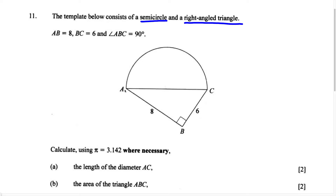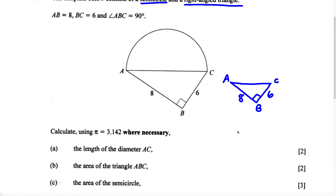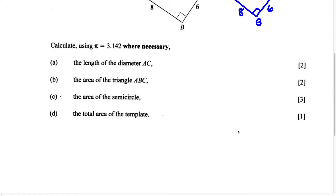If we draw the right-angled triangle separately without the semi-circle, we can see clearly what we're working with. We have a right-angled triangle and need to find side AC. Because we know two sides, we're going to use Pythagoras theorem: A squared plus B squared equals C squared.